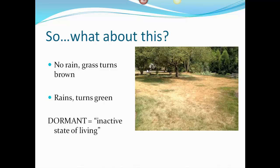The idea that the grass goes brown means it goes dormant — it's living, but in an inactive state. In this case, it has all the characteristics of life: it has cells, it needs water and nutrients, can reproduce, and responds to stimuli. The only thing that's different is that sometimes it's inactive because it doesn't have water, so it turns brown and goes into that resting state. If something is in a dormant state, it is still considered in the living category.